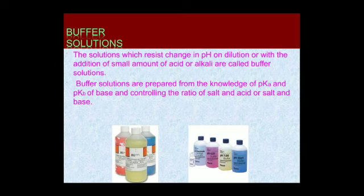For a basic buffer solution, a popular example is ammonium chloride and ammonium hydroxide. To find pH, use the formula: pOH = pKb + log([salt]/[base]), and then pH = 14 − pOH. Note that the pH of a buffer varies with temperature because the value of Kw changes with temperature.